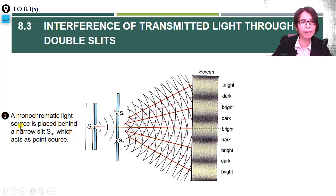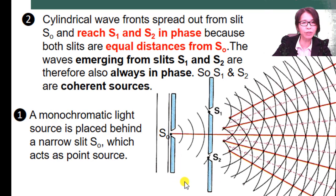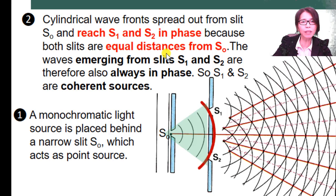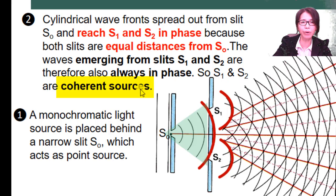A monochromatic light source is placed behind a narrow slit S-naught, which acts as our point source. The cylindrical wave front will spread out from slit S-naught and reach S1 and S2 in phase, because both slits are equal distances from S-naught. So the distance of S1 from S-naught equals the distance of S2 from S-naught. The waves emerging from slits S1 and S2 are therefore always in phase, so we can treat S1 and S2 as coherent sources.